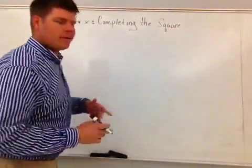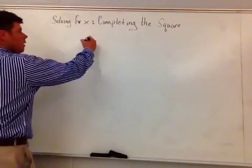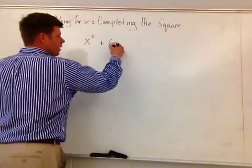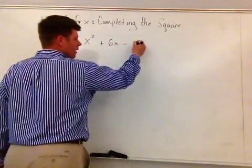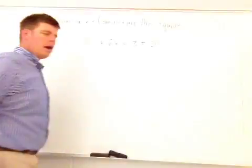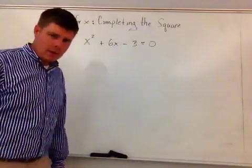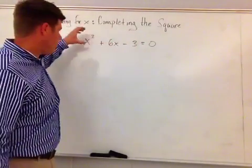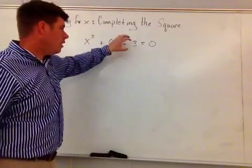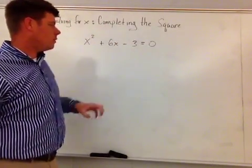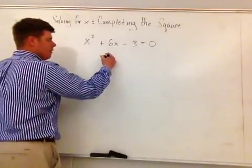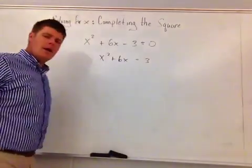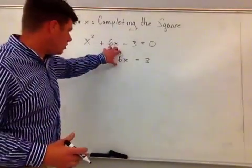And let's just try one that doesn't have a leading coefficient that you have to divide out. So let's, for instance, say that I have x² + 6x - 3 = 0. And I want to solve for x here. Again, what I'm going to do here is that I know that 3 is not a square number, so therefore it can't be the completed square to this. So what I'm going to do here for this particular one is that I can go ahead and get rid of it. So I have x² + 6x, which is equal to 3.